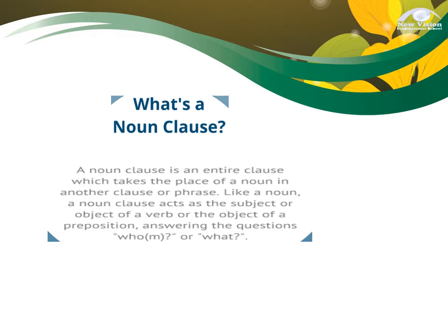Now, what is a Noun Clause? But before that, let's have first a review on dependent and independent clauses. A dependent clause is a phrase containing a subject and a verb that does not express a complete thought. That is why it is called dependent — you are still depending on your independent clause. So your independent clause can stand alone.